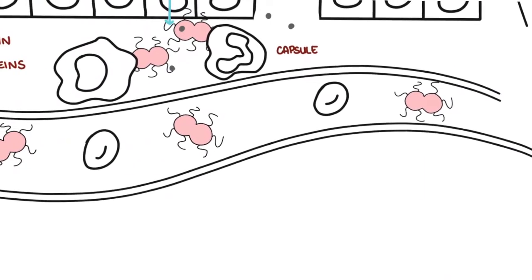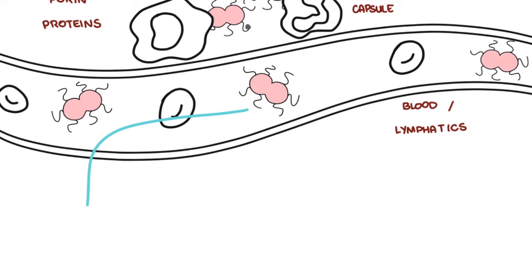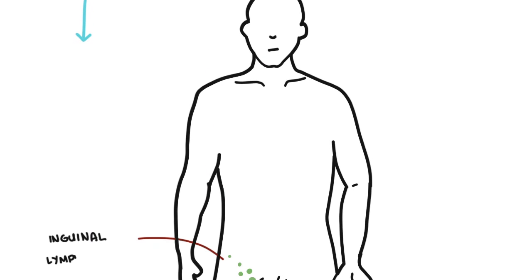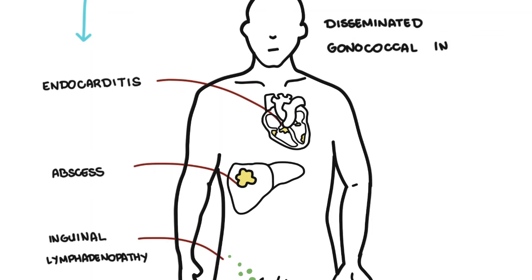Neisseria gonorrhea may invade the lymphatics and blood vessels, and this can cause other complications, including inguinal lymphadenopathy, perineal, perianal, ischiorectal, and periprostatic abscess, for example, endocarditis, as well as disseminated gonococcal infections.